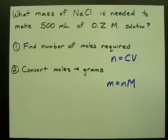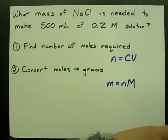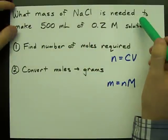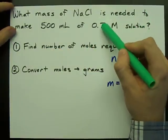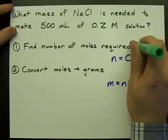What mass of NaCl is needed to make 500 milliliters of a 0.2 M solution? To convert from concentration to mass, first you need to find the number of moles.